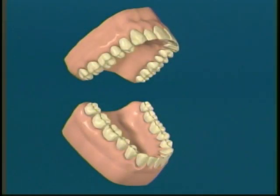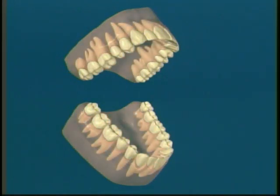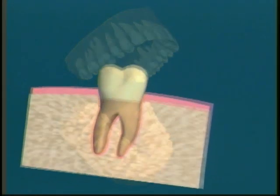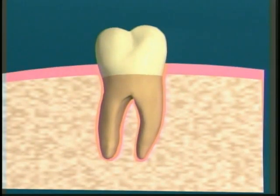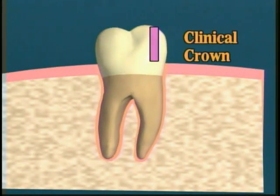People are constantly amazed at how long teeth actually are. In a normal, healthy individual, you only see about one third of the total tooth. The portion you see is referred to as the clinical crown.